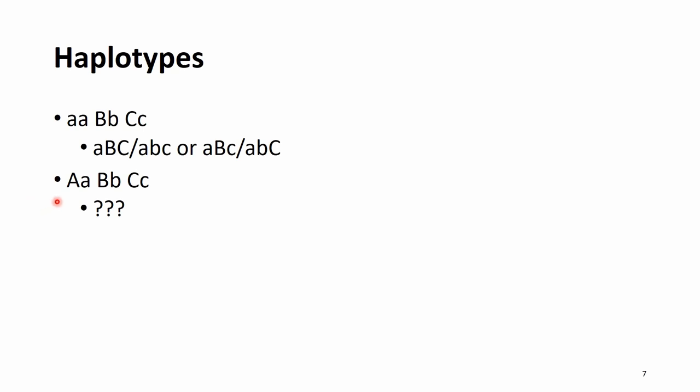Of course the more heterozygotes we have, the more complicated it gets. For example for three heterozygotes we have even more combinations — I put question marks here so if you want you can work this out yourself. Pause the video and try to work out what the actual haplotype possibilities are when we have three heterozygous loci. After you've done it you can unpause and see if you were right, or just continue watching and get the answer in three, two, one, go.